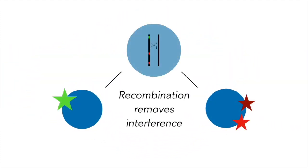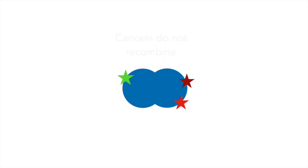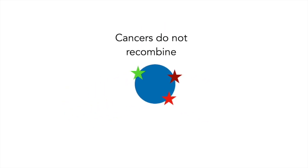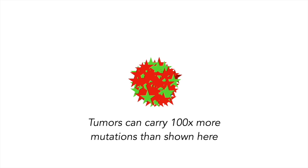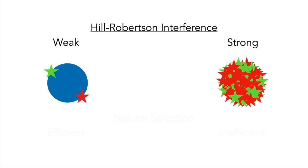Cancers are a very unique organism because tumor cells do not recombine. In this study, we wanted to understand the extent of Hill-Robertson interference in cancer. We hypothesized that interference would be pervasive in tumors carrying many mutations, and thus the efficiency of natural selection should decline as the number of mutations in a tumor increases.